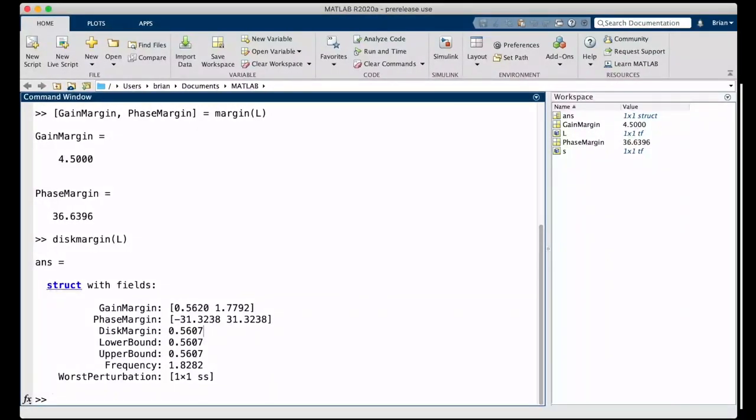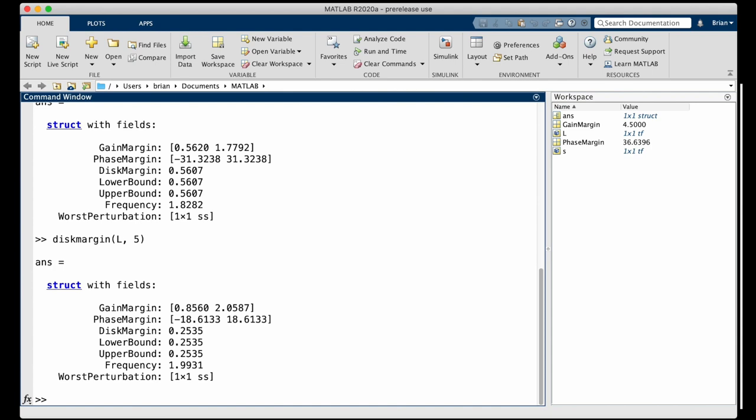Now if we revisit the numbers that we got from the disk margin command in MATLAB, you can see that each of these disk parameters are there. There's the upper and lower gain margin, the upper and lower phase margin, and the disk margin alpha. These are the values for e equals 0, since that's the default in this command. But we can run it again with e equals 5, and see that they are all slightly different. Both the upper and lower gain margins are higher, and the phase margins are lower, just as we expected.